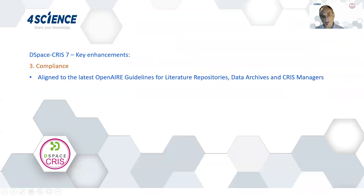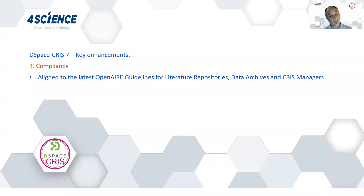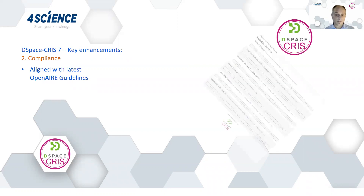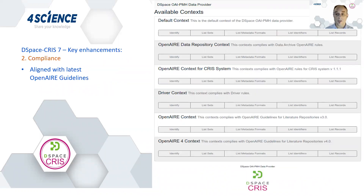The third aspect I'd like to highlight is that of compliance. DSpace CRIS7 is compliant with a range of standards, but the one we'd like to highlight here is the OpenAIRE guidelines — in particular for quality repositories, data archives, and CRIS managers. DSpace CRIS7 in fact comes with out-of-the-box compliance with the OAI-PMH. So it's fully dedicated in that way, and that's already provided built into DSpace CRIS7. That will make your life a lot easier.